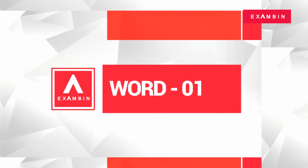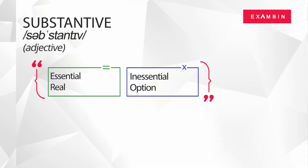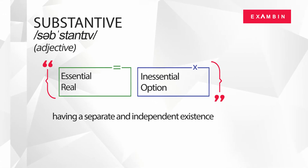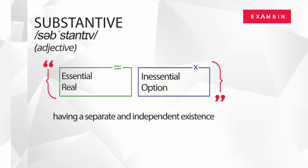Let's look at the first word of the day: Substantive. The word substantive is an adjective. The direct synonyms of substantive are: Essential, Real. In general context, the word substantive means having a separate and independent existence. Inessential and Optional are some of the terms referring to the opposite meaning of the word substantive.